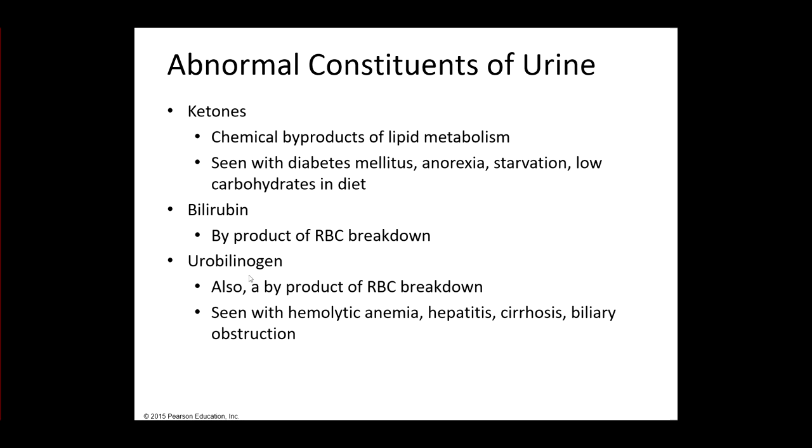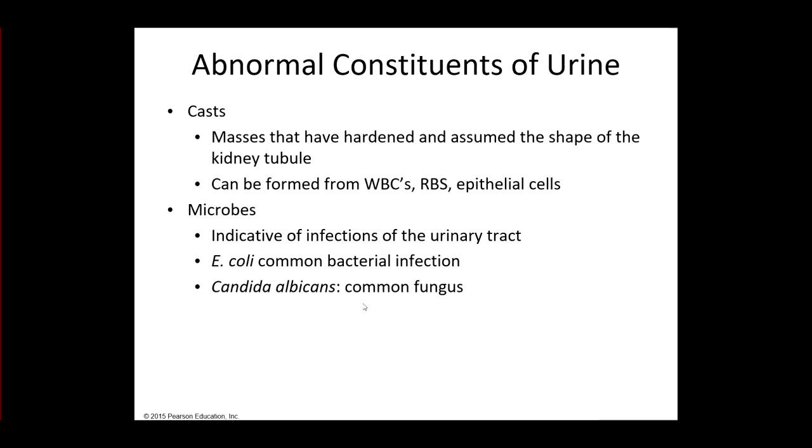Bilirubin is a byproduct of red blood cell production. Same thing with urobilinogen. Both of these would be examples of conditions where we're breaking down red blood cells. There's something known as hemolytic anemia. We're breaking down red blood cells. We could see it with hepatitis, cirrhosis, obstruction of the different bile ducts. That would cause these two to be elevated.